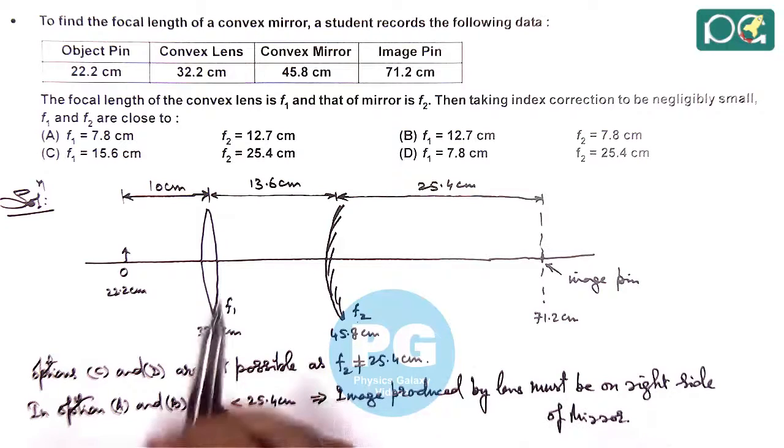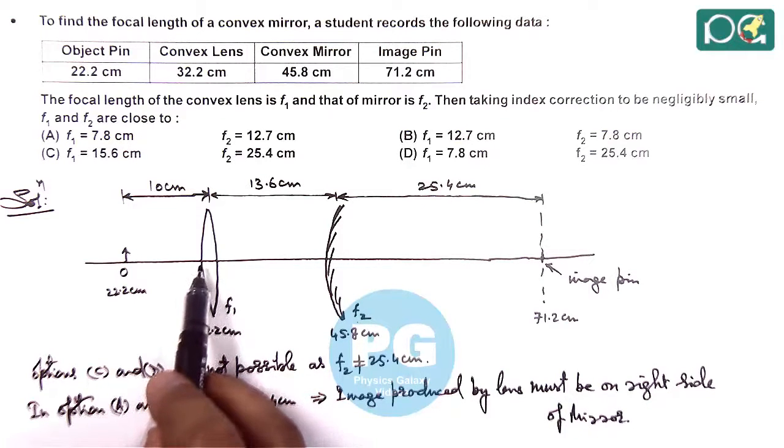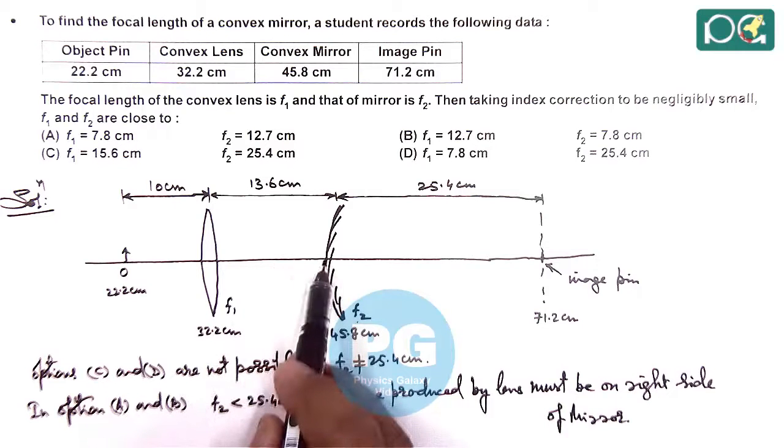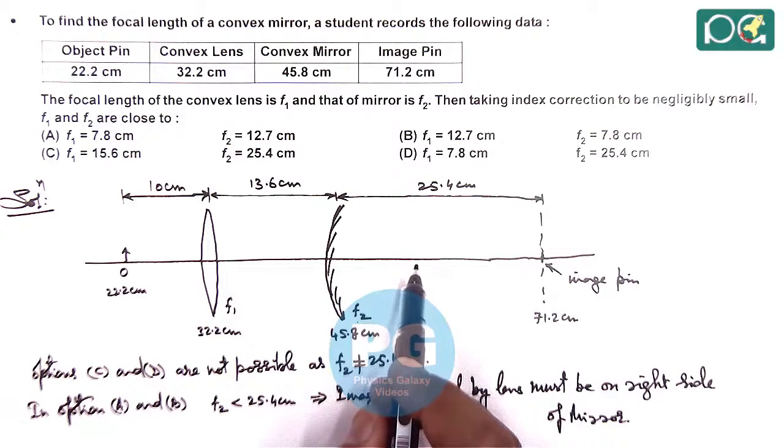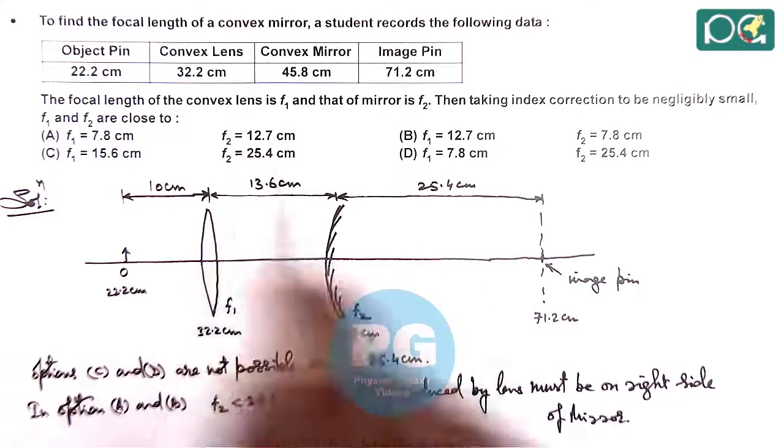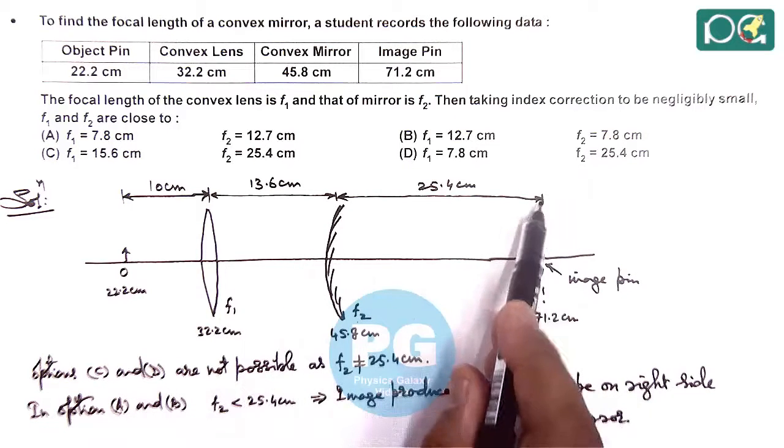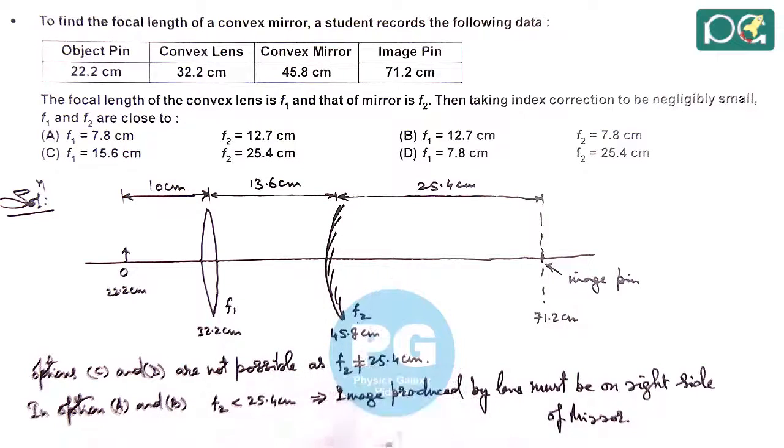This is because if image produced by lens is on the left side of mirror, then its image must be lying between pole and focal point. So focal point is given to be 12.7 or 7.8, that means image can be obtained beyond focal point only if a virtual object is considered. So image produced by lens must be on the right side of mirror. This implies for lens,